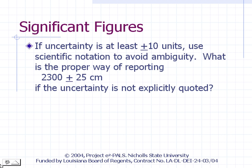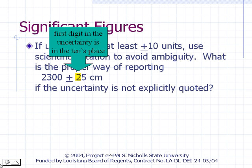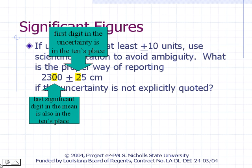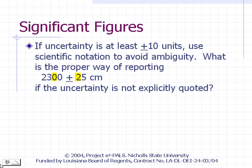If the uncertainty in a value to be reported is larger than ±1 unit, it is best to use scientific notation to avoid ambiguity. For example, suppose the length of something is found to be 2,300 ± 25 centimeters. The first non-zero digit in the uncertainty is 2, in the tens place, so 2,300 should be reported to the tens place. To avoid writing an ambiguous trailing zero, we write 2,300 in scientific notation as 2.30 × 10³.